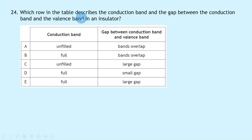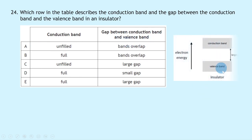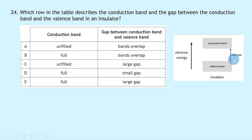Question 24: In an insulator, the conduction band is empty — there are no free electrons to conduct. This means the conduction band is unfilled, narrowing to A or C. The band gap between the conduction band and valence band is large, making it very difficult for electrons to be excited into the conduction band. So the answer is unfilled conduction band and large band gap — answer C.